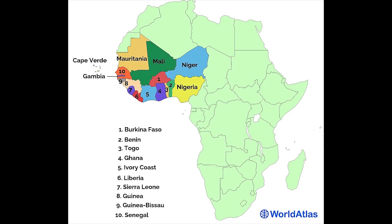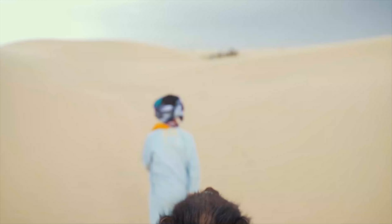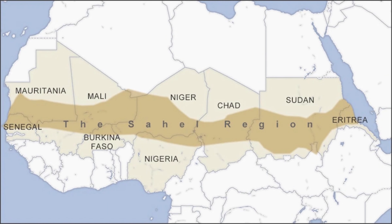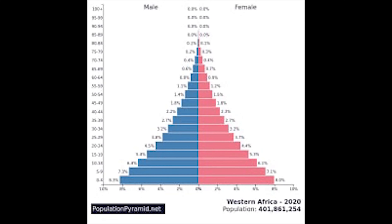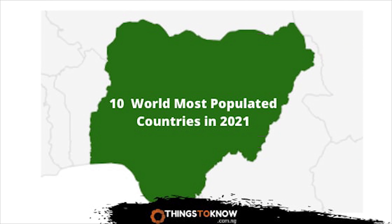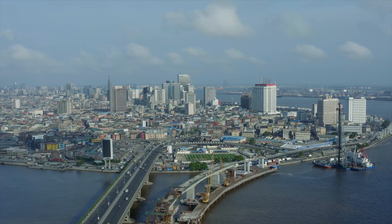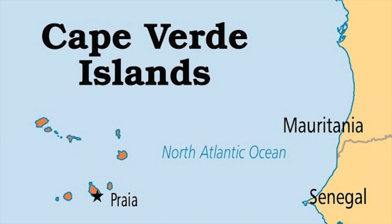West Africa is comprised of 16 countries. The northern portion consists of the Sahel region, the semi-arid land that separates the Sahara Desert from the savannas to the south, while the other half of West African countries are located in the savanna region close to the Atlantic Ocean. The total population of West Africa is an estimated 411 million, about half of which live in Nigeria — the most populous country on the African continent and the 7th most populous in the world. Nigeria also contains Africa's largest city, Lagos, home to approximately 9 million people. West Africa's least populous country is Cabo Verde, an island country with a population of about 556,000.